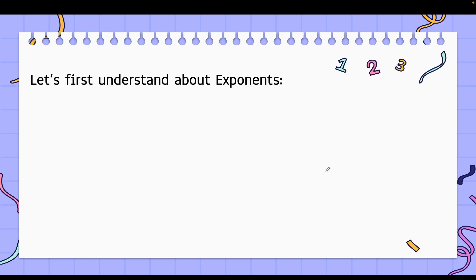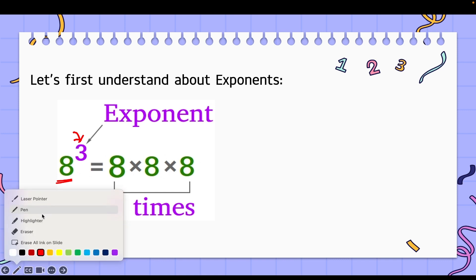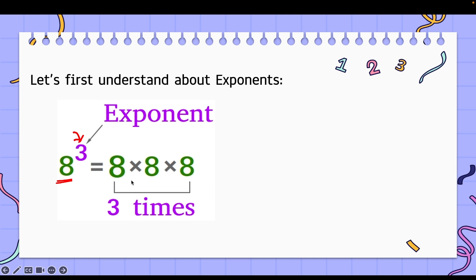First of all, I want you to understand what exponents are — the basic definition. Now, 8 to the power 3 is said to be in exponential form because it has a base and it has an exponent or a power. The base here is 8 and the power is 3. So 8 to the power 3 means 8 is multiplied three times: 8 × 8 × 8.